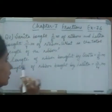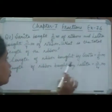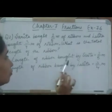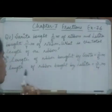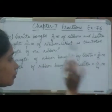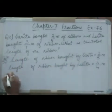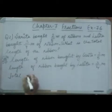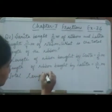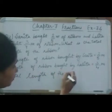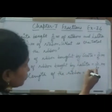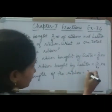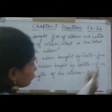So you will write: length of the ribbon bought by Sarita is 2/5 meter. Length of the ribbon bought by Lalita is 3/4 meter. Now write: total length of the ribbon. We have to add, so it is 2/5 plus 3/4.